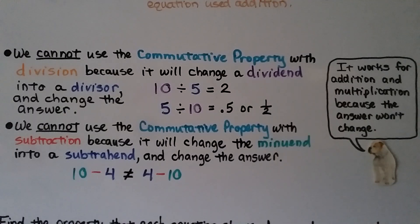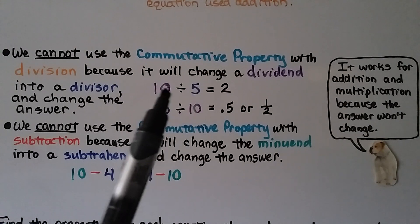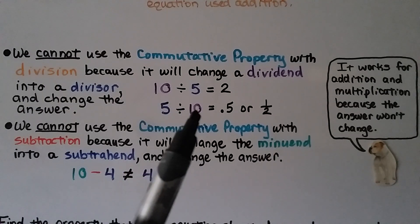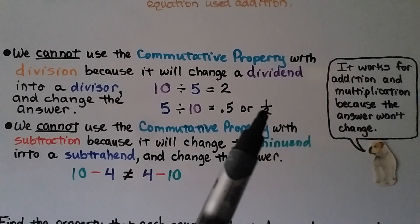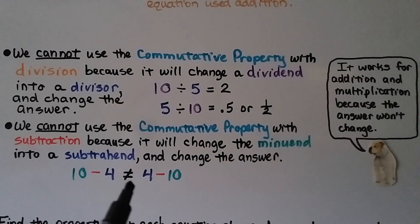We cannot use the commutative property with division because it will change a dividend into a divisor and change the answer. We have 10 divided by 5 — 10 is our dividend and 5 is our divisor — which equals 2. If we change their order to 5 divided by 10, that's a completely different equation: 5 split into 10 equal parts equals one half. And we cannot use the commutative property with subtraction because 10 minus 4 is not equal to 4 minus 10. It works for addition and multiplication because the answer won't change.